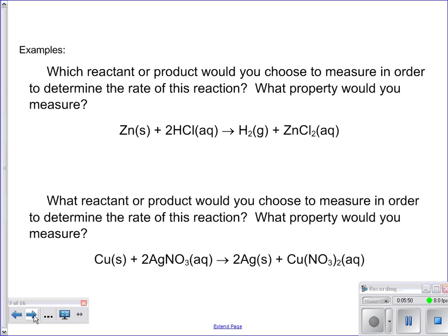Okay in this example it says which reactant or product would you choose to measure in order to determine the rate of the reaction? What property would you measure? So in the first one with the zinc plus hydrochloric acid what might you measure? More than one right answer. Okay so you could measure the volume of your hydrogen gas that's produced. What else might you measure? Zinc. So you mass your zinc before the reaction then you mass it after the reaction. So those would be some pretty good ideas.